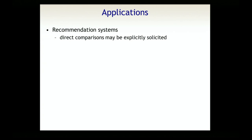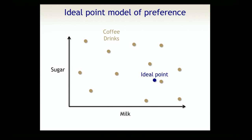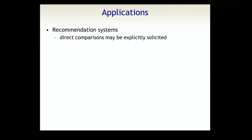One thing I want to emphasize is that the way I've been describing this problem—we observe which of two drinks someone prefers—is one way of collecting feedback. You could also ask for a rating, but people tend not to like giving numerical ratings to things. So there's reason to prefer directly requesting these comparisons where we explicitly ask, which of these two things do you prefer?